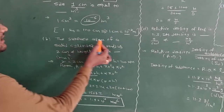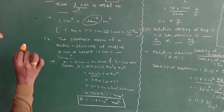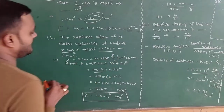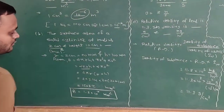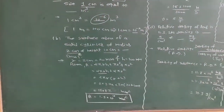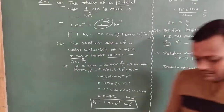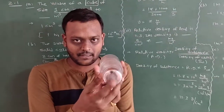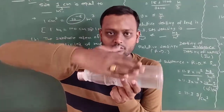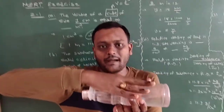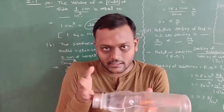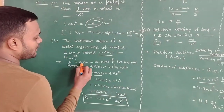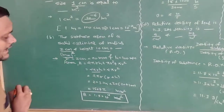Now let's move to the next part. The surface area of a solid cylinder of radius 2 cm and height 10 cm is equal to blank mm square. You know from 9th standard that a cylinder has 3 surfaces: two circular faces each with area pi r square, and one curved surface. What is the area for the curved surface? 2 pi r h. So we have to add these 3 areas. What is given: r equal to 2 cm, but we need to find area in mm square.